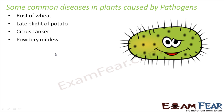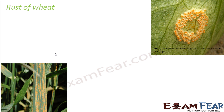Let us talk about rust of wheat. Normally we use the term rust with regards to iron — iron gets rusted. A rusted iron has a reddish layer formed on it. In a very similar way, on the wheat plants you also have a layer of reddish-yellowish color, which gives the appearance of rust, and that is why it is called rust of wheat.